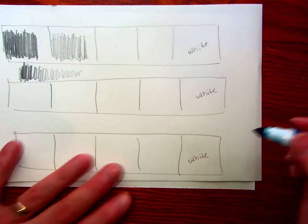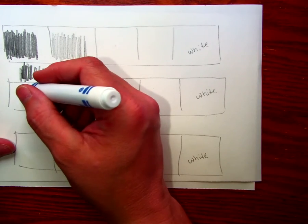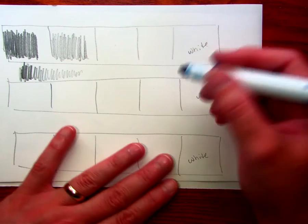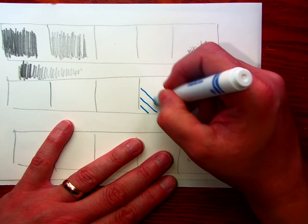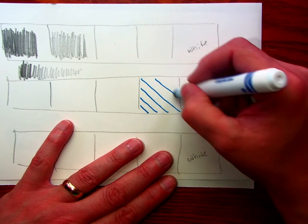So your darkest dark would be solid blue, almost a solid blue. Your lightest light would be white, so we're going to leave this box blank. The more lines I have here, the darker my value would be.